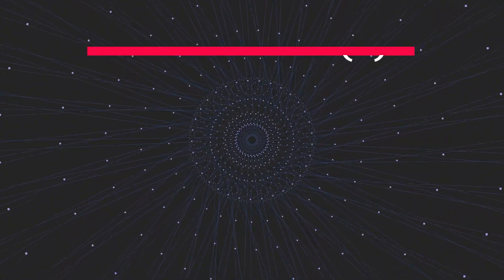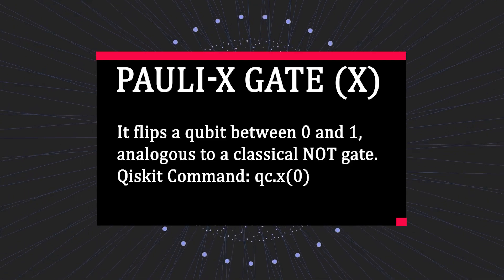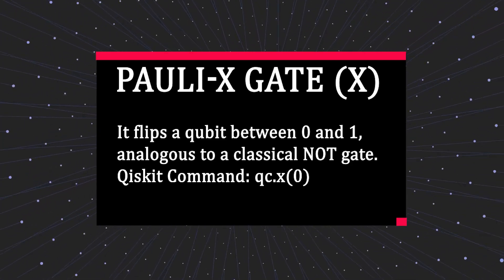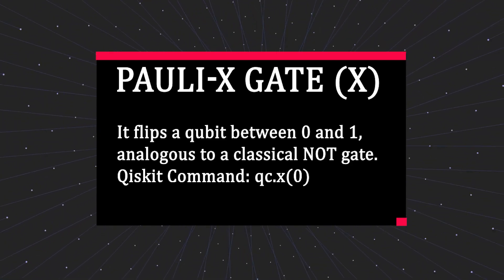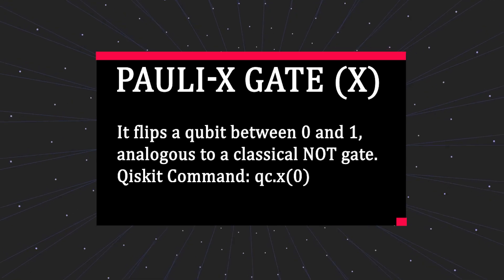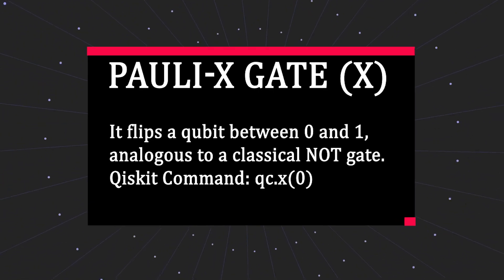Number two: Pauli X gate, typically just called the X gate. It flips a qubit between zero and one, analogous to a classical NOT gate. If your qubit was definitely in the zero state, applying an X gate will change it to one.